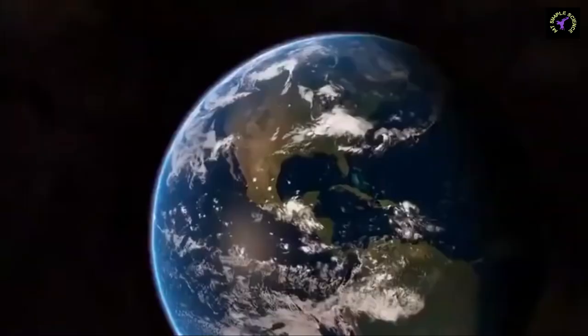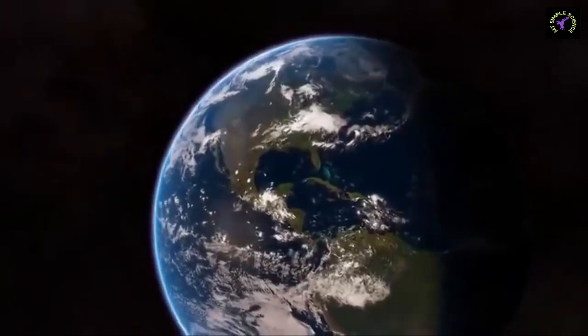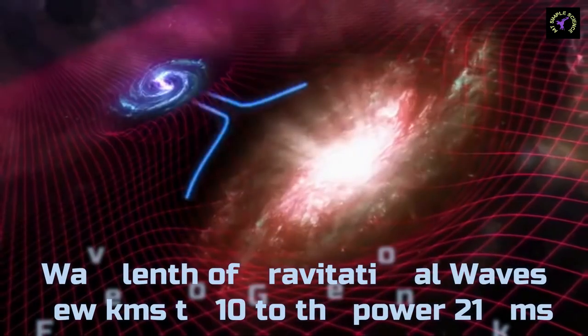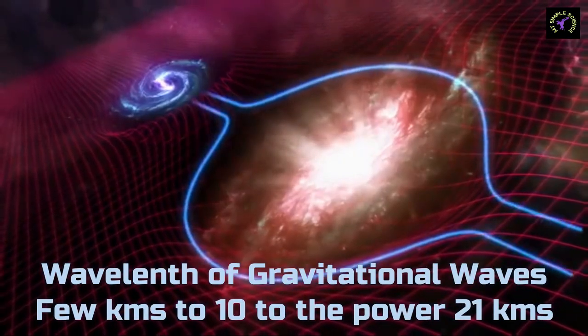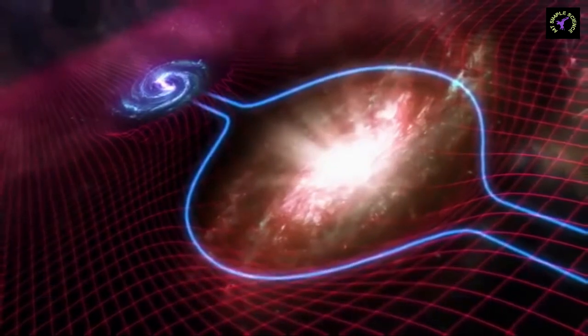Gravitational waves travel with the same speed of light. The wavelength of gravitational waves varies from a few kilometers to 10^-21 kilometers. Gravitational waves can be polarized and diffracted.